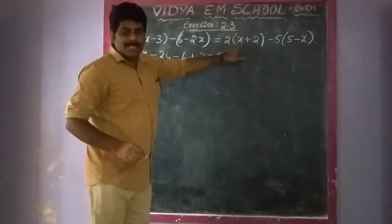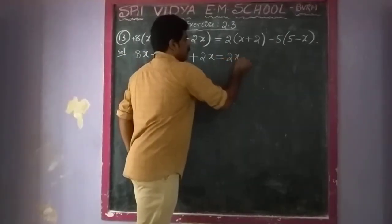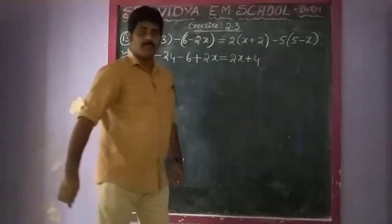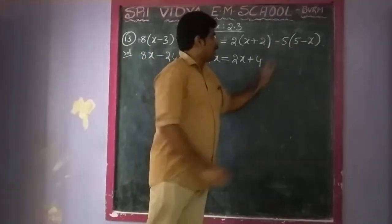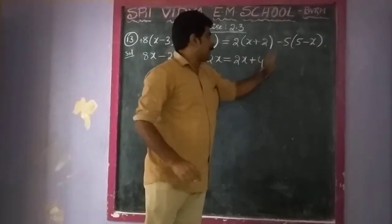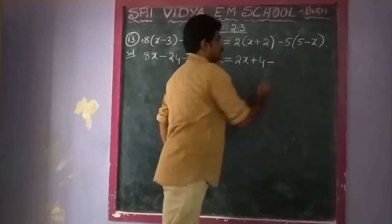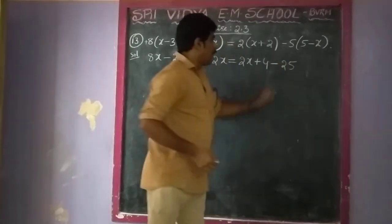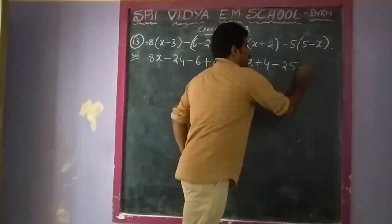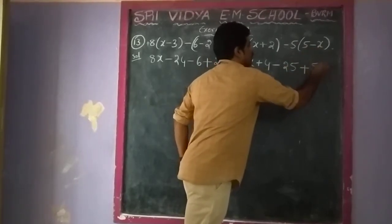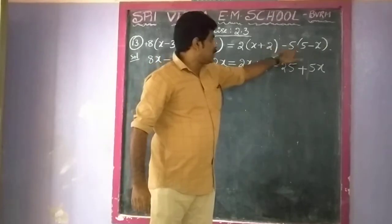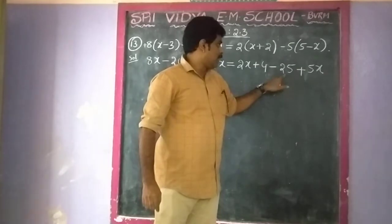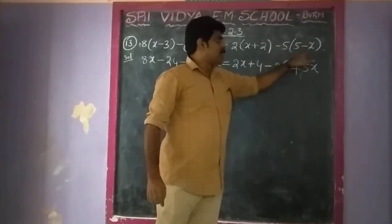Is equal to: 2 into x gives 2x. Plus 2 into 2 gives 4. After that, minus into plus gives minus. 5 into 5 gives 25. And minus into minus gives plus. 5 into x gives 5x. So: 2x plus 4 minus 25 plus 5x.